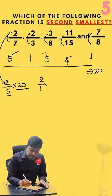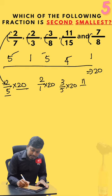Similarly, 2 divided by 1 into 20. 3 divided by 5 into 20. 11 divided by 4 into 20. 7 divided by 1 into 20.